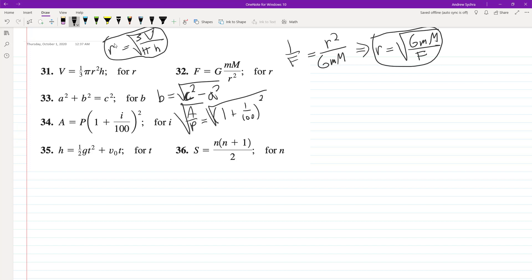Take the square root of both sides, so 1 + I/100 = √(A/P). We're solving for I.